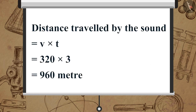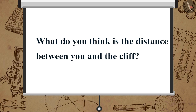We know the distance travelled by the sound is equal to V multiplied by T, which is equal to 320 multiplied by 3, which is equal to 960 meters. Now, what do you think is the distance between you and the cliff?